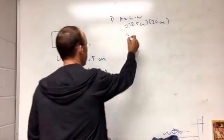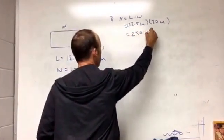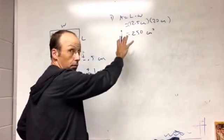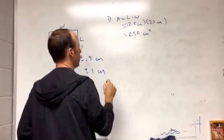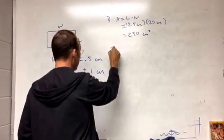So I have 12.5 times 20, so 250 centimeters squared. The units do matter, right? Centimeters times centimeters, I get centimeters squared. So that's the area.